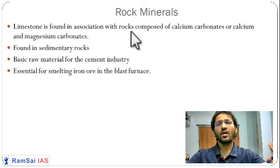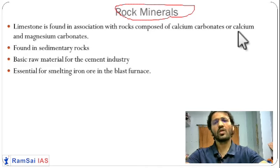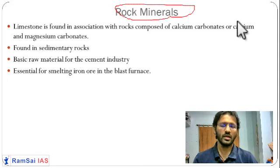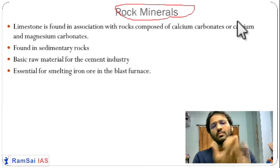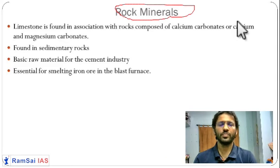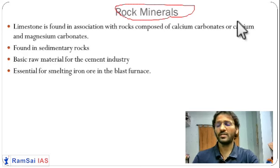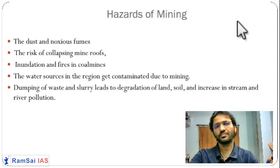Rock minerals are minerals found in the form of rocks that are used directly. For example, rock salt is sold as a large piece of rock which you take home, grind into powder, and use in food. Limestone — made of calcium carbonate and magnesium carbonate — is found in sedimentary rocks and is very important for the production of iron and steel.